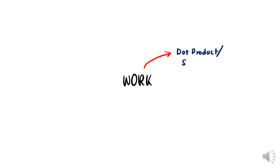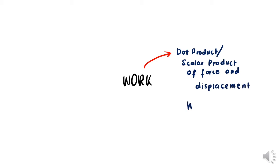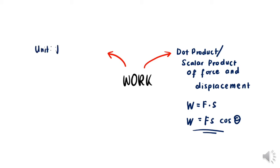Work is a dot product, or scalar product, between force and displacement. We can express it as W = F · s = Fs cosθ, where θ is the angle between force and displacement. Since it's force times displacement times cosθ, when θ equals 90 degrees it will equal 0. That's why we need to always refer to the force that is parallel to the displacement — that will give the maximum work.